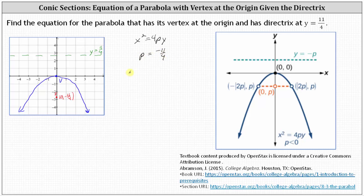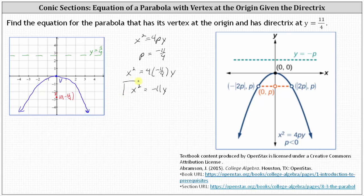Therefore, the equation is x squared equals 4 times negative 11 fourths times y. Simplifying, we have x squared equals negative 11y. We could solve for y, but we'll go ahead and leave it in this form.